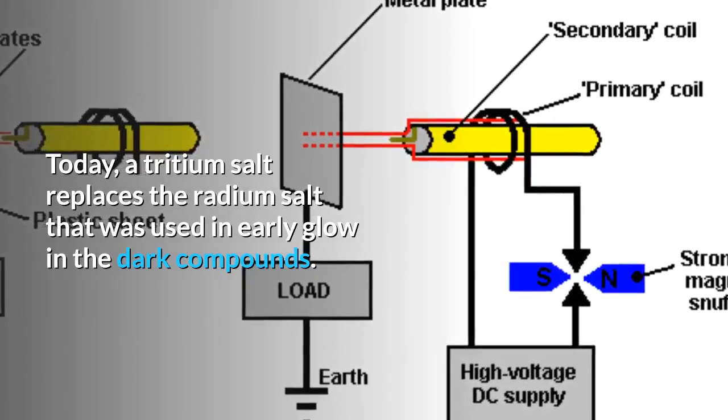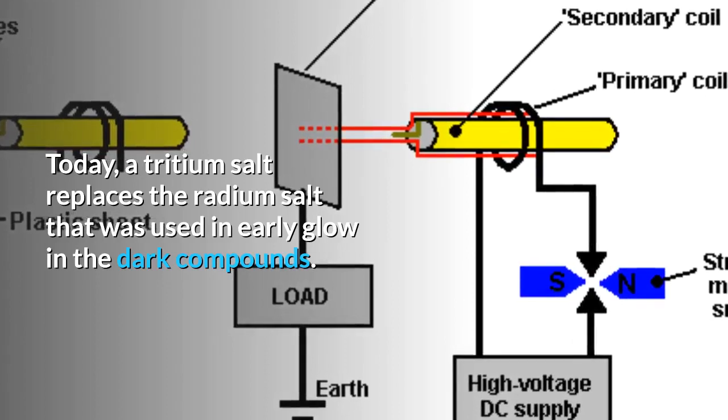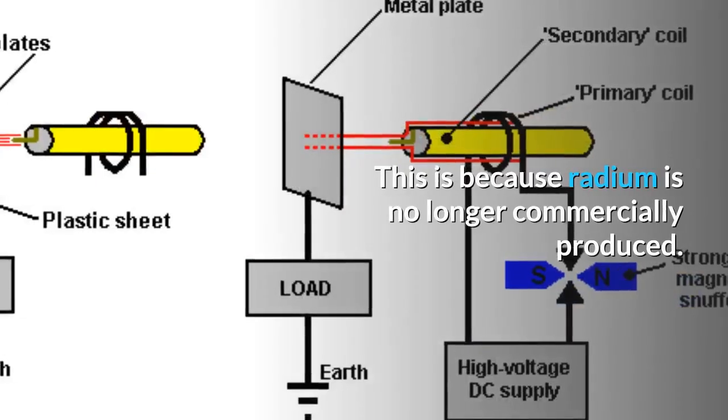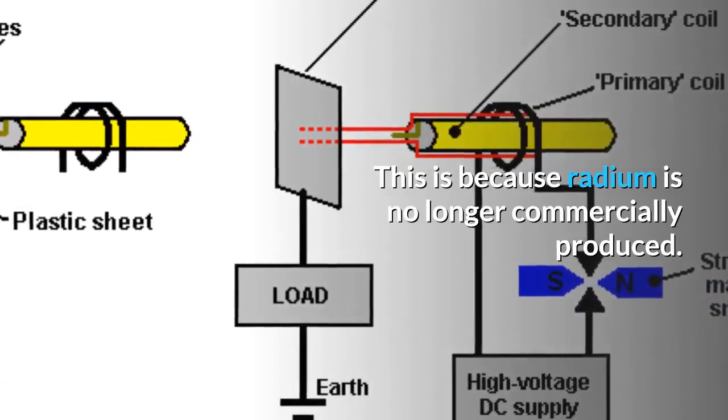Today, a tritium salt replaces the radium salt that was used in early glow-in-the-dark compounds. This is because radium is no longer commercially produced.